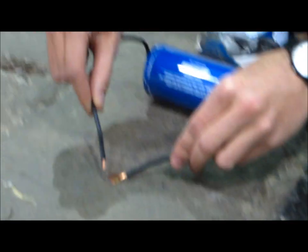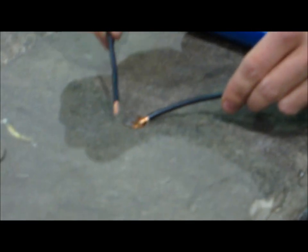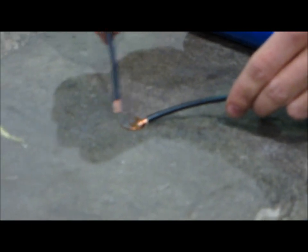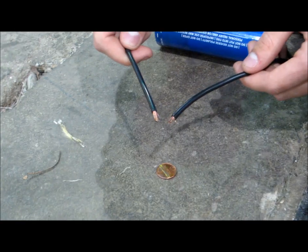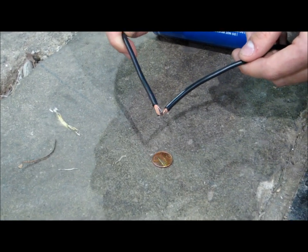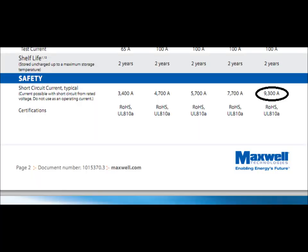Finally, we'll short it out over a penny. The reason this stuff burns so easily is because so much current can pass through it. The datasheet here shows that for this capacitor, the short circuit current is literally over 9,000 amps.